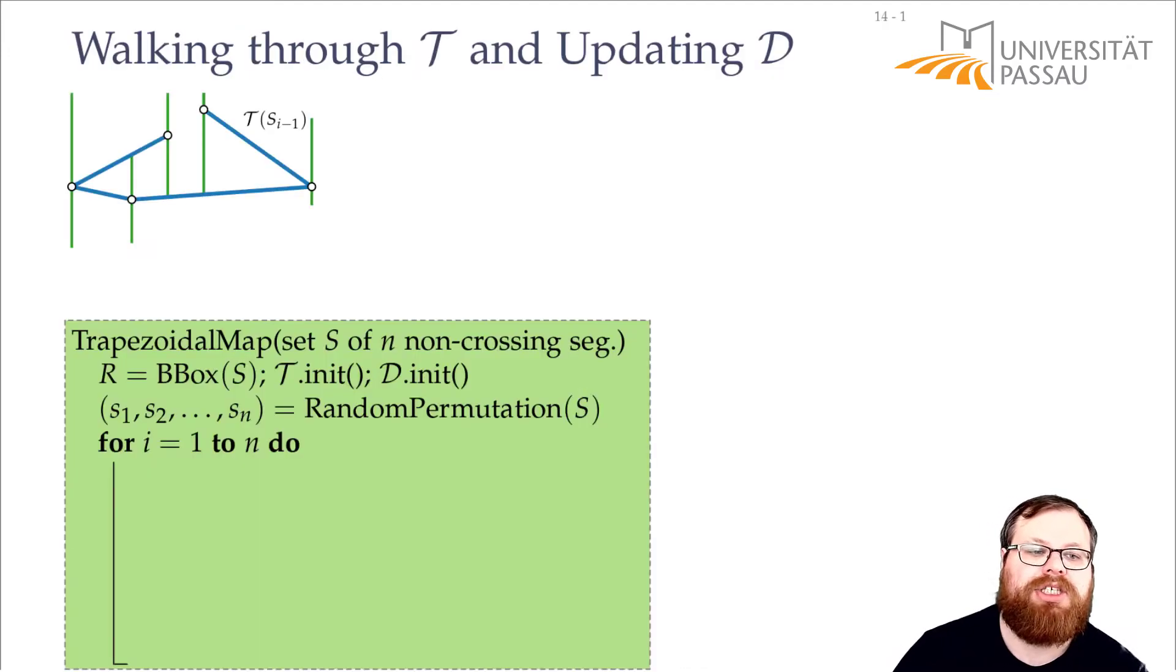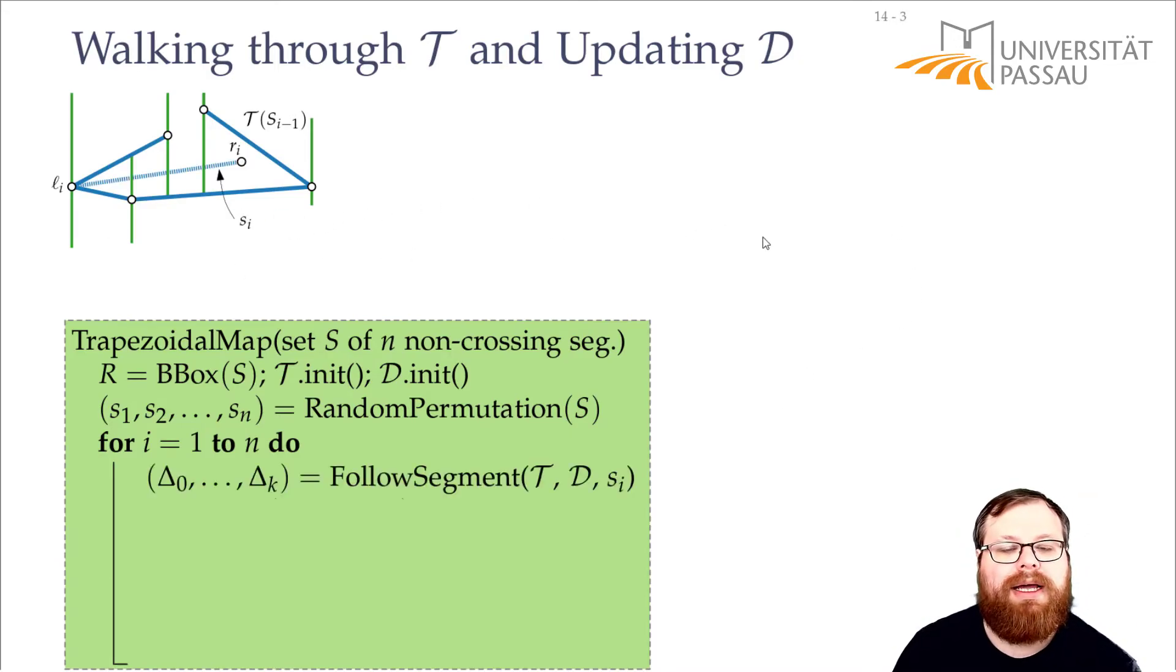How does this look like in general? So we have our function trapezoidal map that gets a set of n non-crossing segments. It first builds a bounding box and initializes our two data structures, and then finds a random permutation of the segments. And then in every step, when we add our segment Si, we find all these trapezoids, trapezoid 1 to trapezoid K, by just following the segment from the left to the right point.